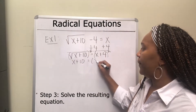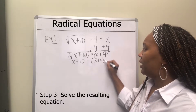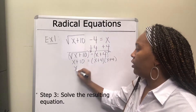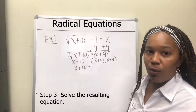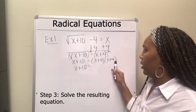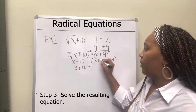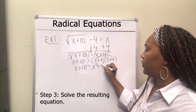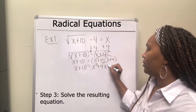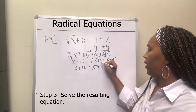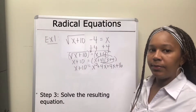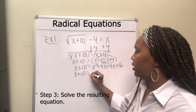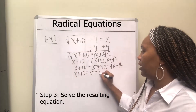And x plus 4 squared means x plus 4 times x plus 4. To multiply that out, you can use FOIL: x times x is x squared, x times 4 is 4x, 4 times x is 4x, and 4 times 4 is 16. Combining like terms, you get x squared plus 8x plus 16.